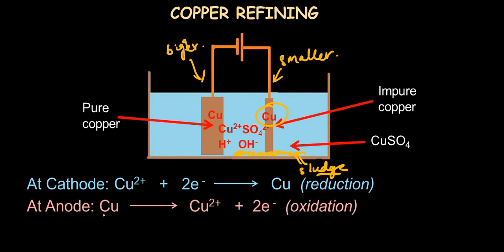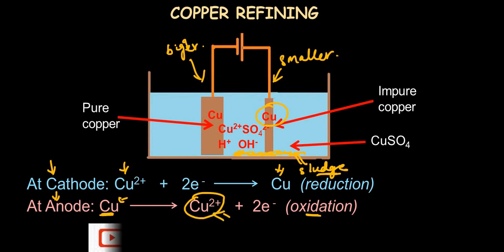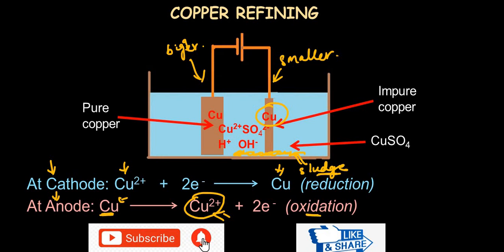The key difference in the half equations: at the anode in copper refining, copper is oxidized to form copper ions — Cu → Cu²⁺ + 2e⁻. This replaces the earlier half equation where hydroxide ions were oxidized to form oxygen gas. At the cathode, Cu²⁺ + 2e⁻ → Cu. So the cathode and anode half equations are opposite to each other — copper ion becomes copper at the cathode, and copper becomes copper ion at the anode.